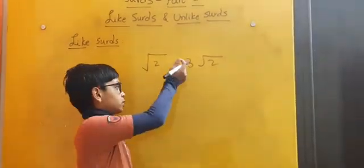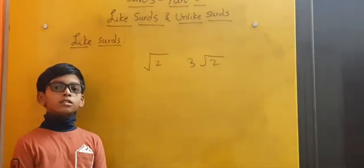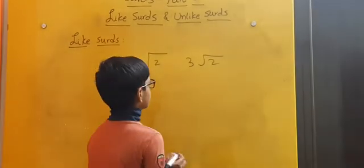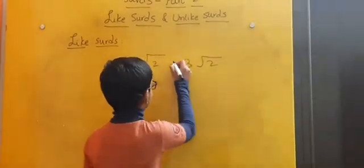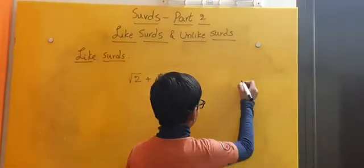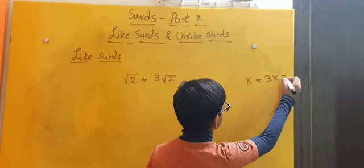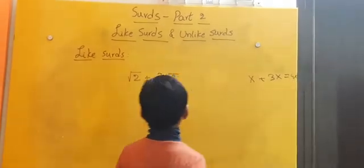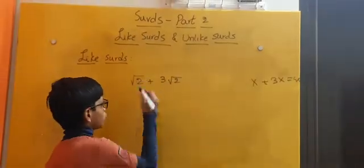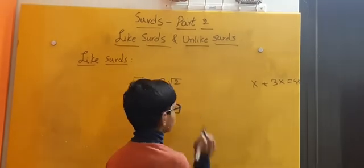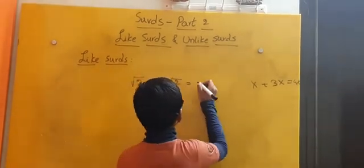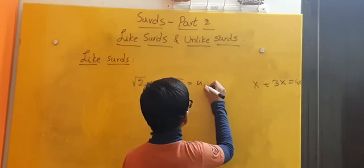We can combine this like surd means that we can add or subtract the like surds. So now let us add the like surds. In general, we know that x + 3x is equal to 4x. In the same way here, √2 + 3√2 is 4√2.